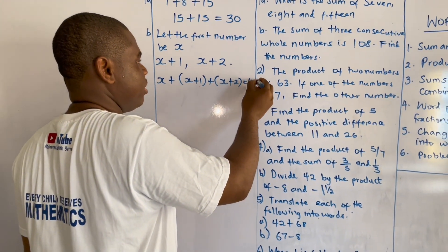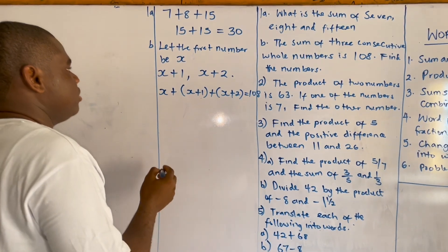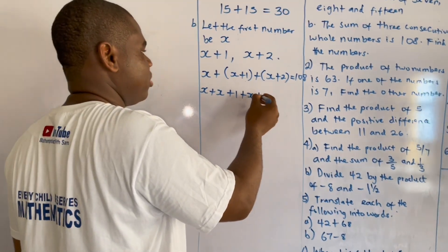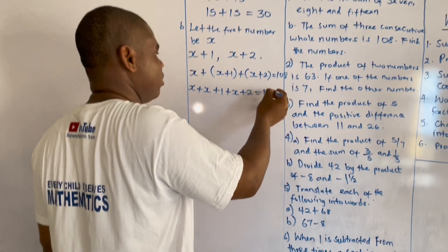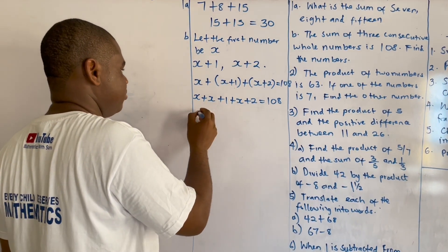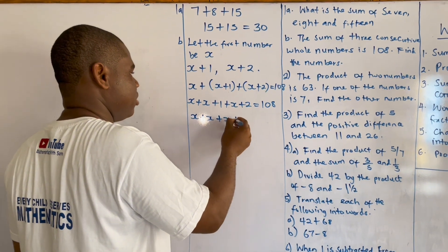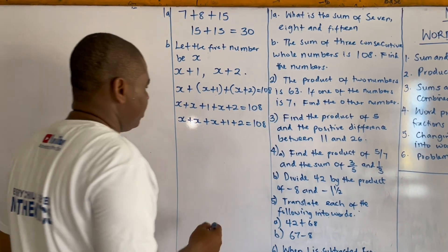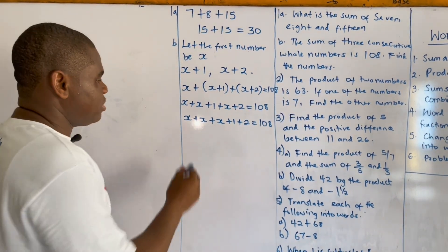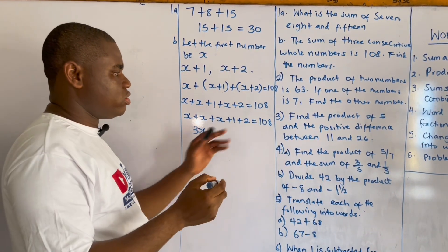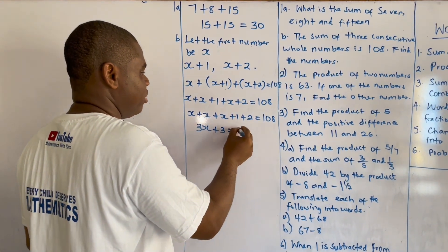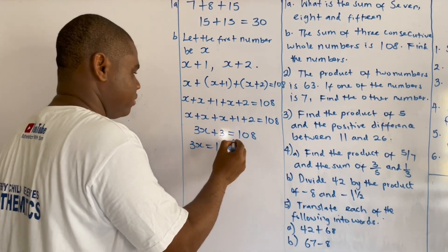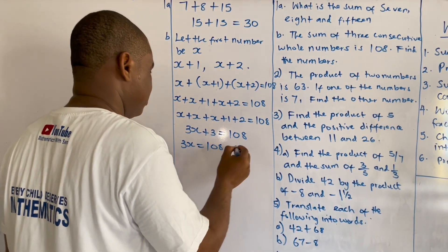Opening the brackets: x plus x plus one plus x plus two equals one hundred and eight. Grouping the terms: x plus x plus x plus one plus two equals one hundred and eight. So x plus x plus x gives us three x, and one plus two is three, giving us three x plus three equals one hundred and eight. Collecting like terms: three x equals one hundred and eight minus three.